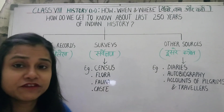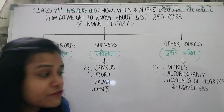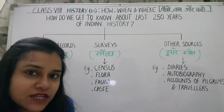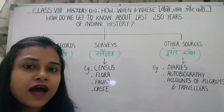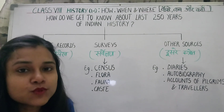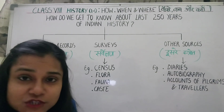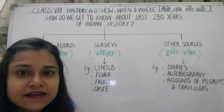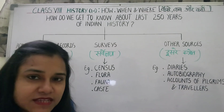Other people have written autobiographies about what is going on in their lives. And then there are accounts of pilgrims and travelers — many people who traveled to different places or countries wrote their experiences, and our historians got a lot of information from them. But there were many people who couldn't read and write and had no time to maintain records, like people working in tribal areas or in the mines.